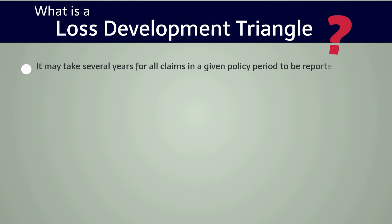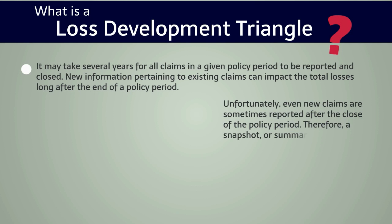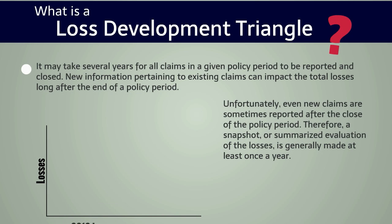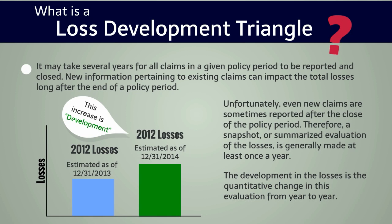It may take several years for all claims in a given policy period to be reported and closed. New information pertaining to existing claims can impact the total losses long after the end of the policy period. Even new claims are sometimes reported after the close of the policy period, therefore a snapshot or summarized evaluation of the losses is generally made at least once a year. At the end of 2013, we estimated the losses for the 2012 policy period, and then at the end of 2014, the losses were assessed again for the same 2012 policy period and we see an increase in the estimated ultimate incurred losses. The development in the losses is the quantitative change in this evaluation from year to year.